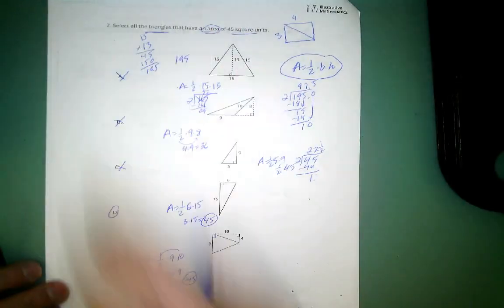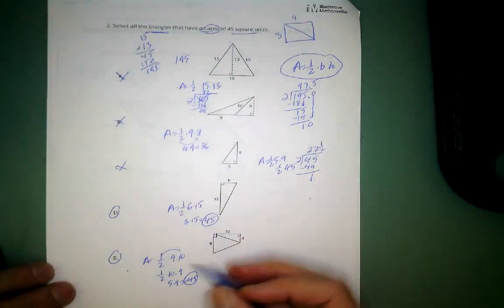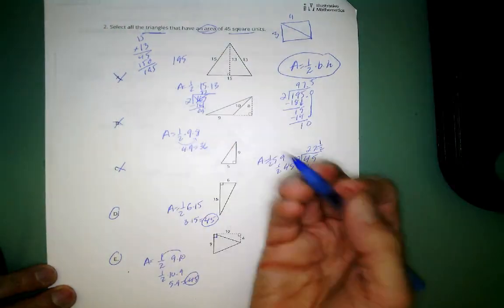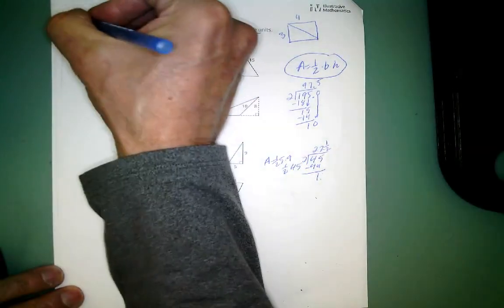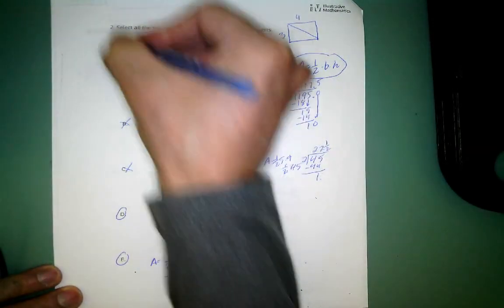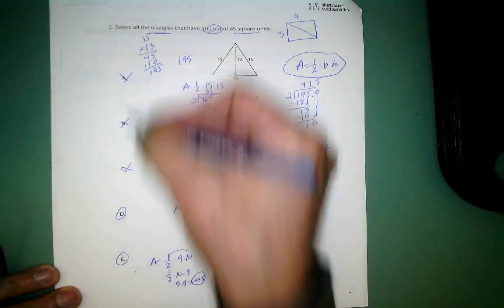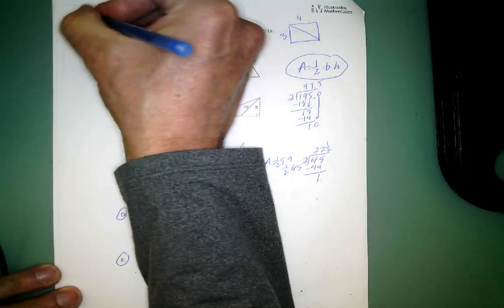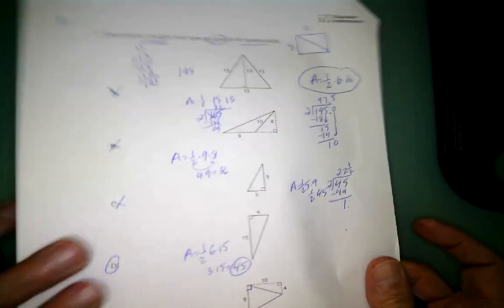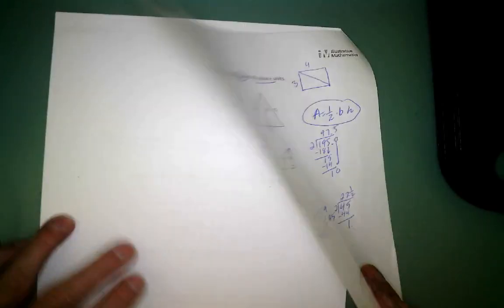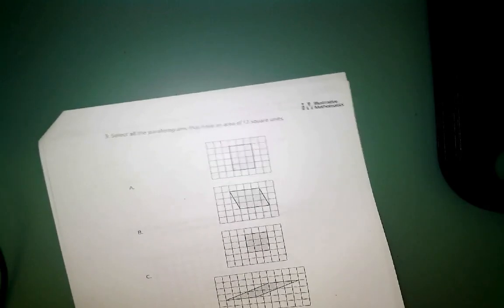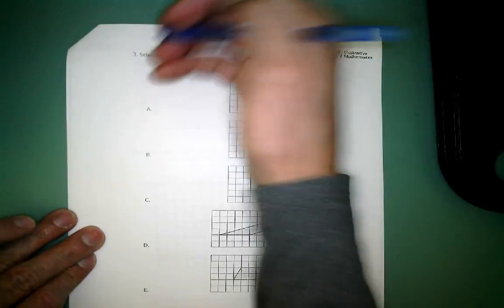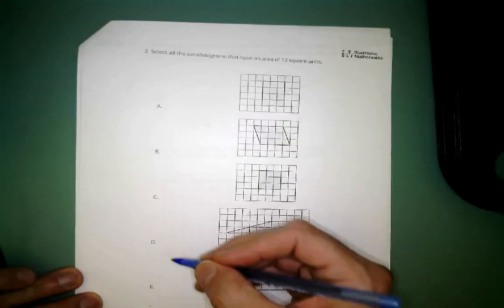This page was worth ten points: one point for the answer and one point for the work on each of the five problems, two points each. The first page also gave you two points — two for your name and two for the problem, though there were really five problems hidden in problem two.